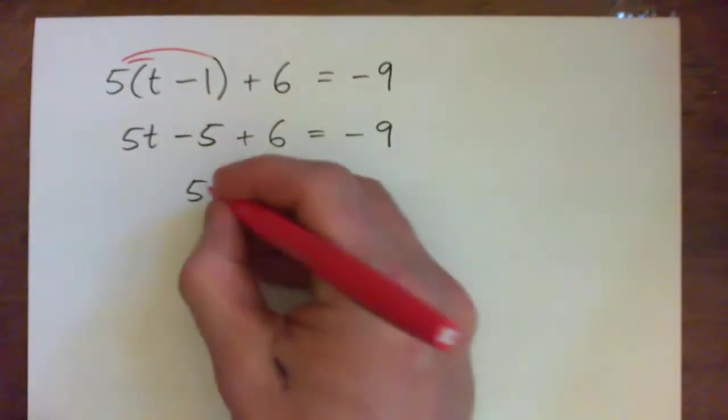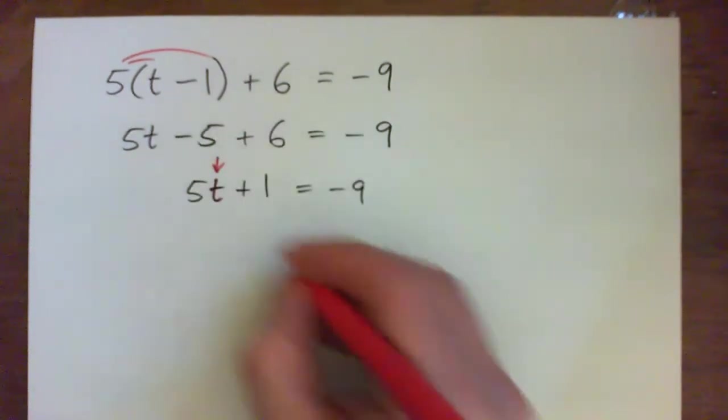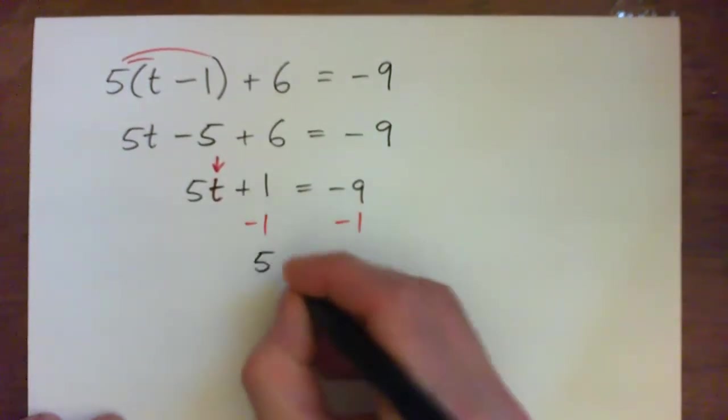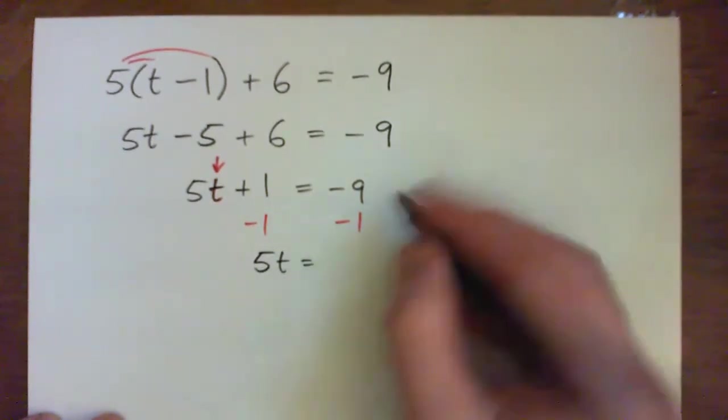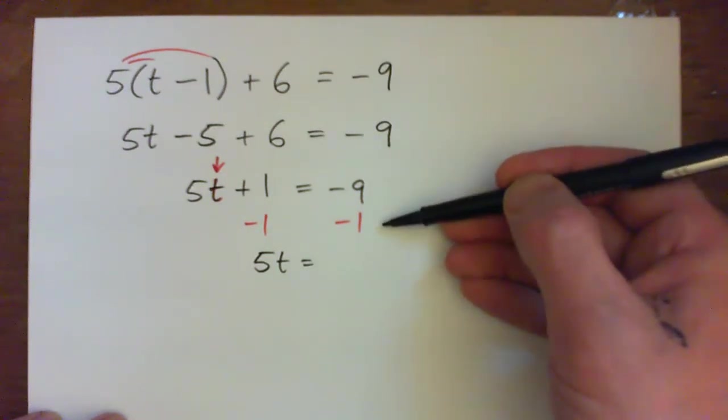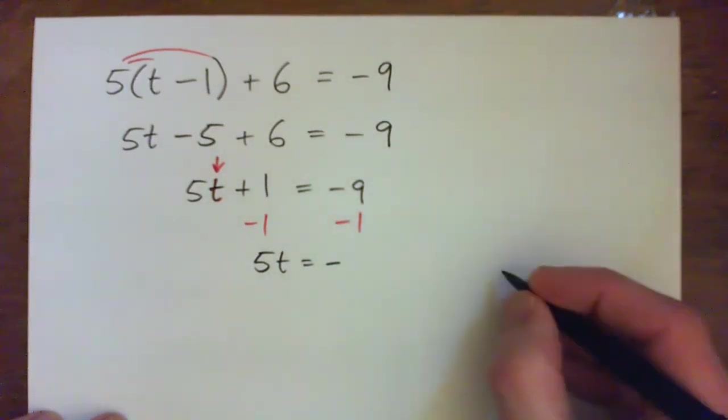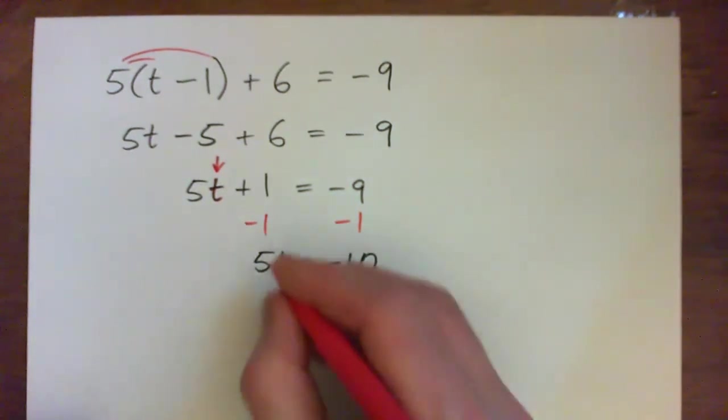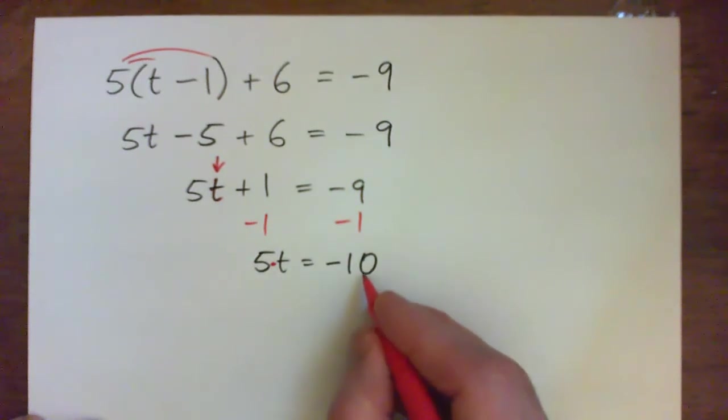And now we need to solve for t. We can subtract 1 from both sides. And that will give us 5t equals negative 9 minus 1. You're in debt by $9, you spend $1, now you're in debt by $10. So 5 times t equals negative 10.